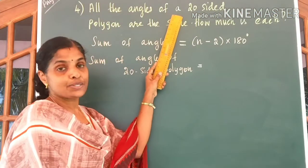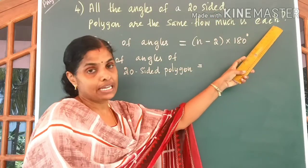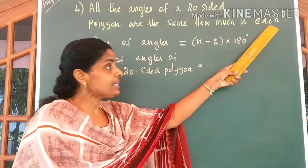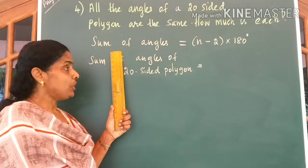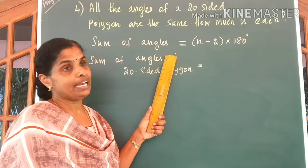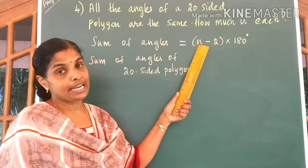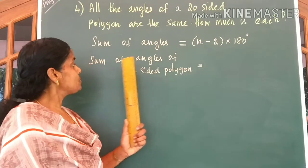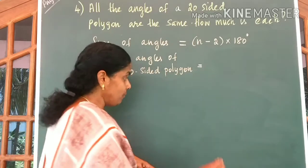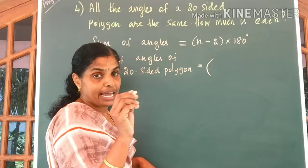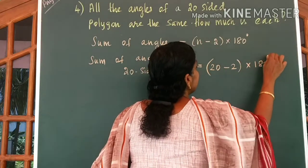Come to the next question. All the angles of a 20-sided polygon are the same — how much is each? We have to find out each angle of a 20-sided polygon. We know the sum of angles of a polygon to be N minus 2 into 180 degrees, where N denotes the number of sides. So, the sum of angles of a 20-sided polygon will be equal to 20 minus 2 into 180 degrees.